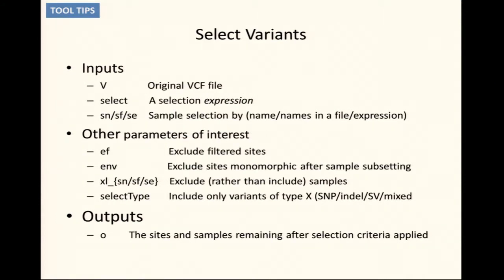One tool to do this is SelectVariants. What SelectVariants does is it allows you to pull out samples and allows you to pull out sites based on properties of those samples — in particular the sample ID or functions that will match sample IDs — and properties of the site itself, which could be the location by passing in -L, or it could be parameters in the info fields. So you can easily select on allele frequency less than 1% by adding in --selectAF less than 1, and it will look in the info field for an AF annotation and ask whether it's less than 0.01.